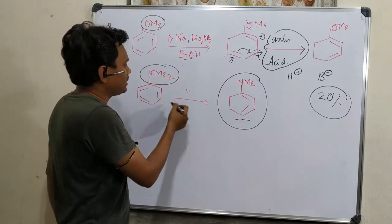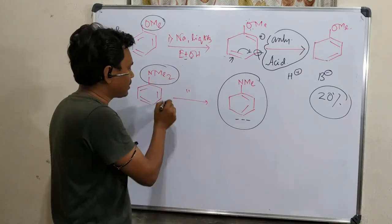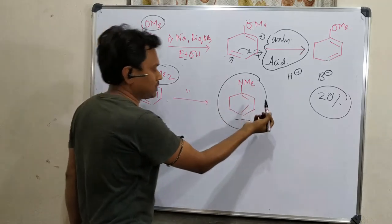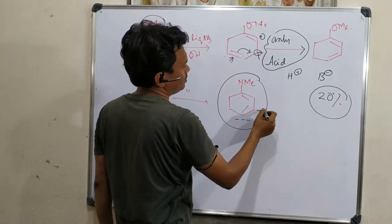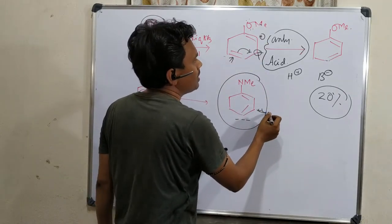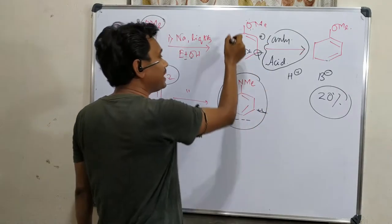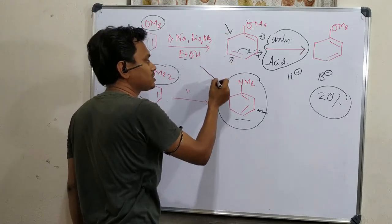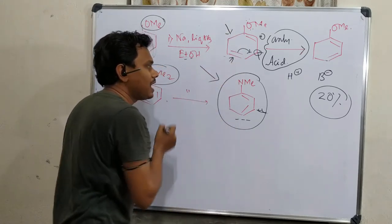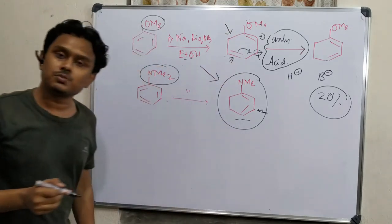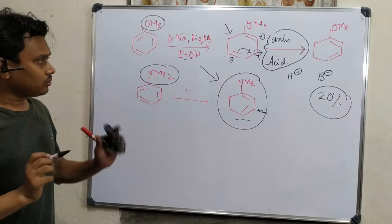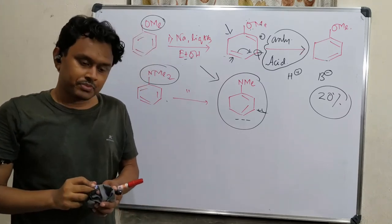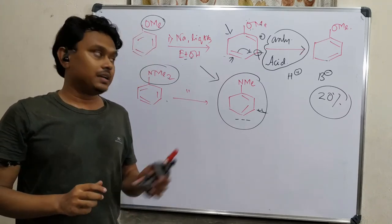Please keep it in mind, because in an exam it could be given: what would be the product? You may think simple parts about this, so you may end up with the wrong answer. Keep it in mind: in anisole relatives, diene is produced; in case of aniline — dimethylaniline — amine is produced. So this is the end of my discussion.